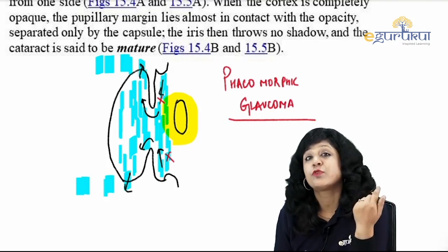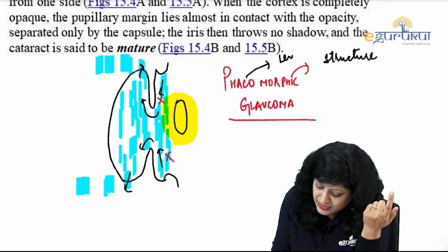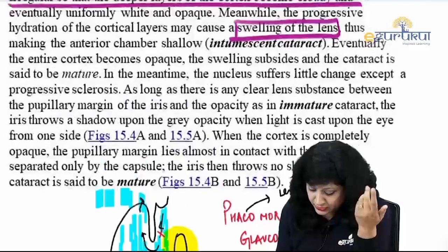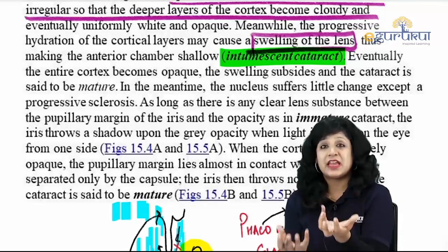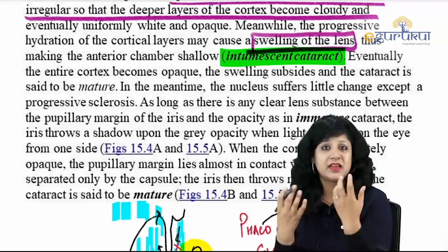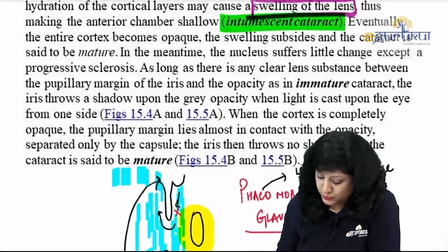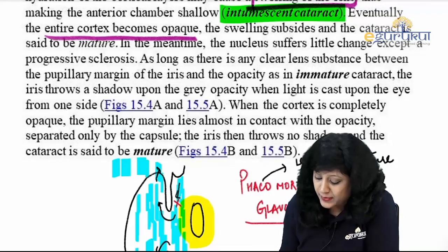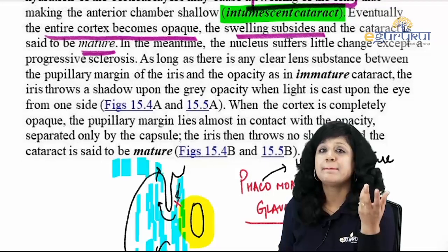This kind of cataract — where it has taken in hydration and moisture — is called the intumescent cataract. Eventually the entire cortex becomes opaque, swelling subsides, and the cataract becomes mature. In the meantime, the nucleus undergoes a little change except for sclerosis.